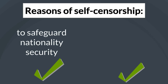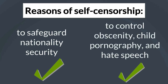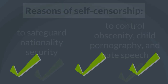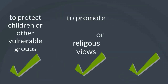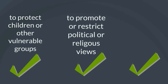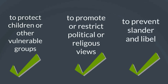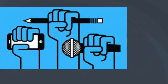Self-censorship reasons include: one, to safeguard national security; two, to control obscenity, child pornography, and hate speech; three, to protect children or other vulnerable groups; four, to promote or restrict political or religious views; and five, to prevent slander and libel.